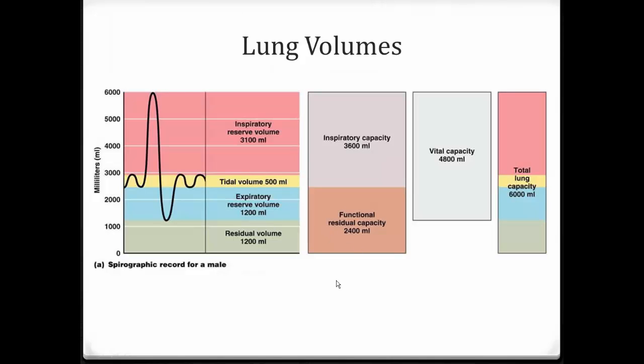These other values are simply adding up these values. For example, inspiratory capacity is tidal volume and inspiratory reserve volume added together. Functional residual capacity is expiratory reserve volume and residual volume put together. Vital capacity is expiratory reserve volume, tidal volume, and inspiratory reserve volume together. Total lung capacity is vital capacity plus the residual volume.